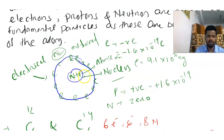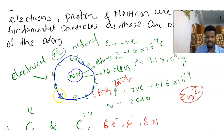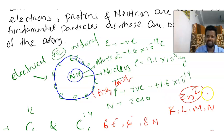This shell is called an energy level shell, and the electrons are arranged according to the 2n² rule. The shells are called K, L, M, N shells. These are called energy level shells.